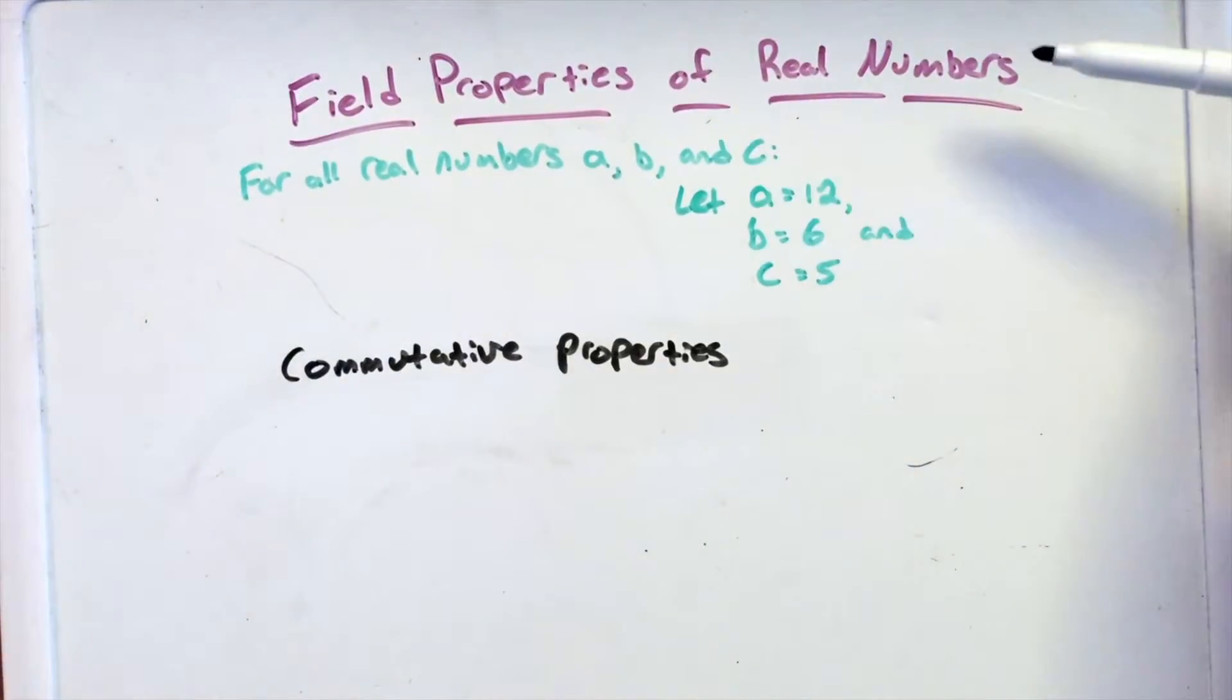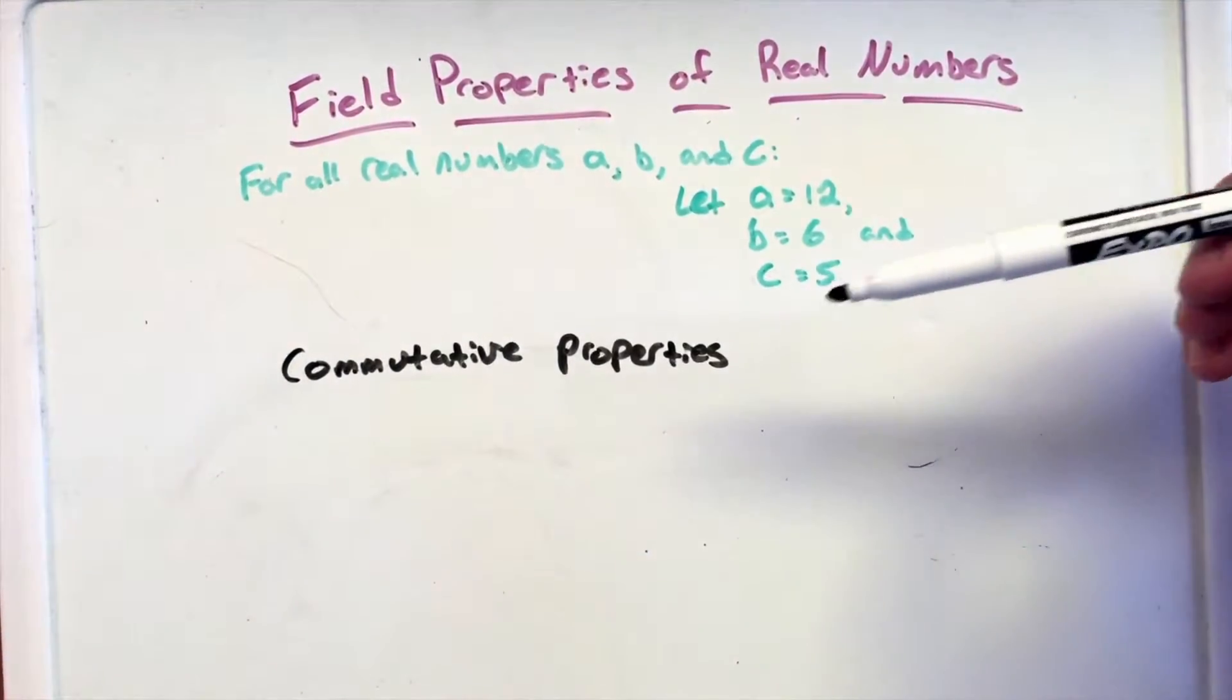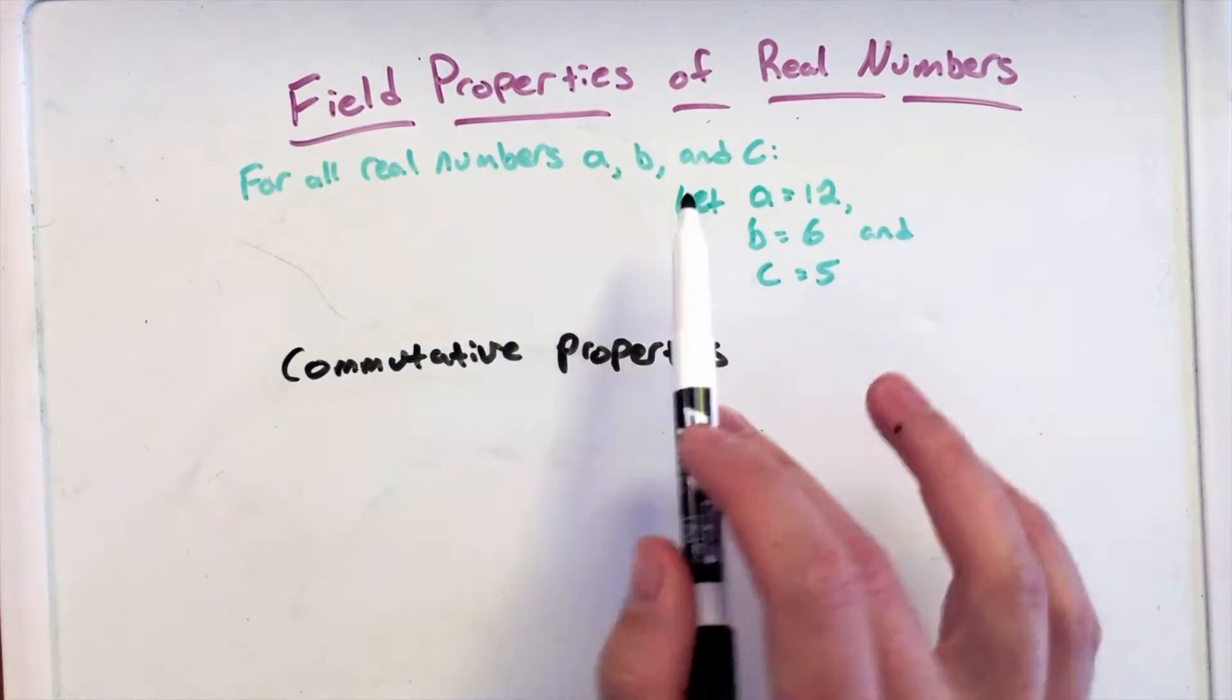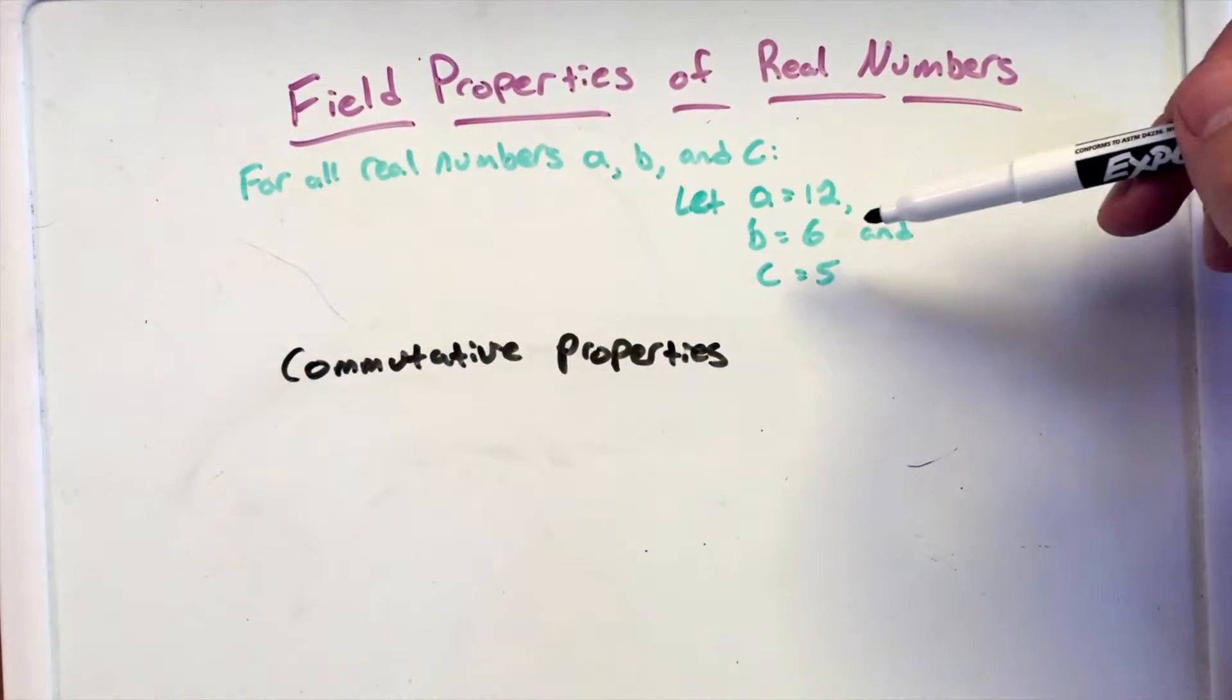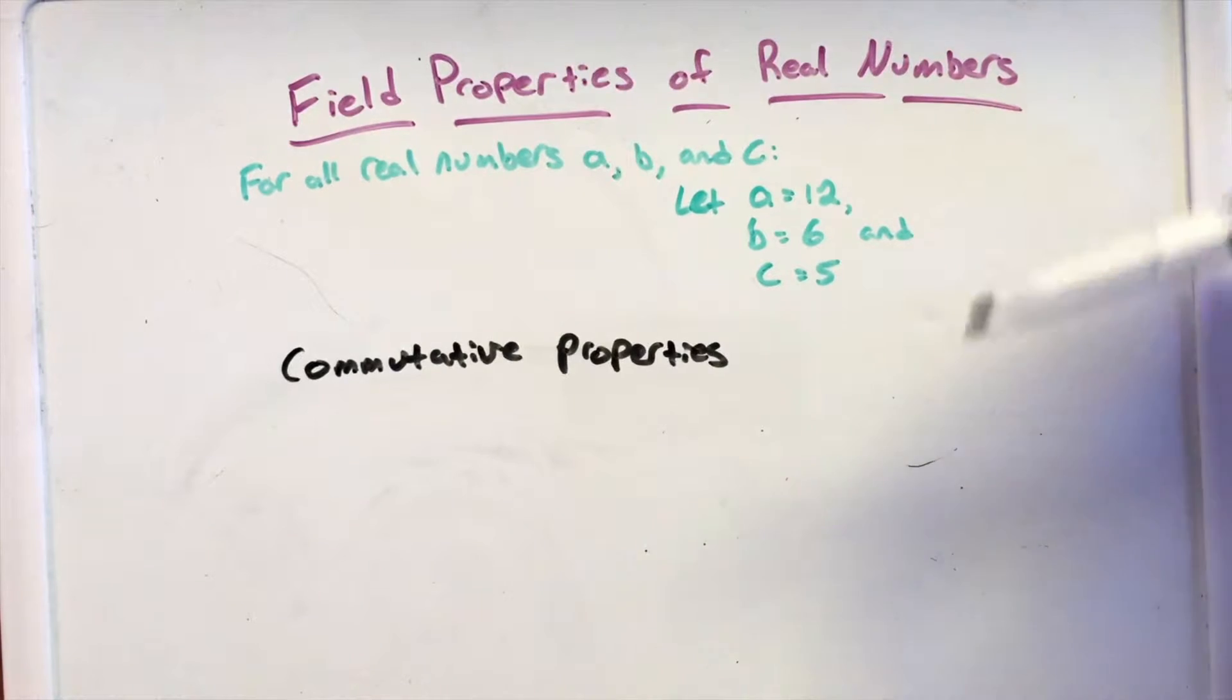The second video in the field properties of real numbers are the commutative properties. Again, for all of our numbers A, B, and C, they are real numbers, and we're setting A equals 12, B equals 6, and C equals 5 for this example here.